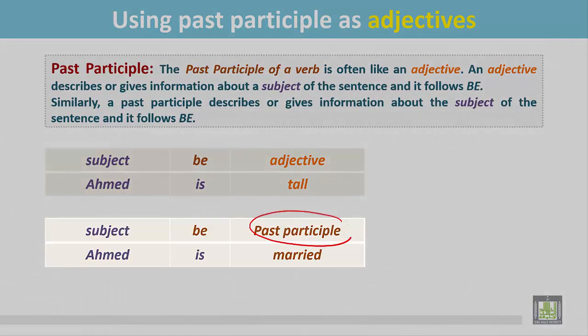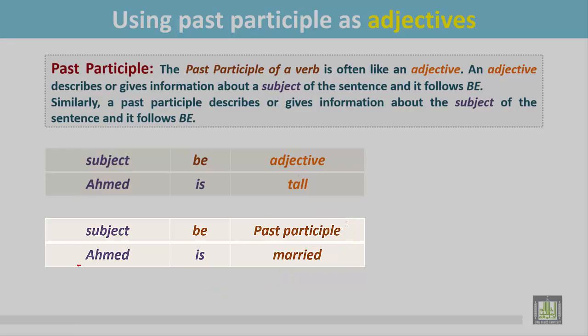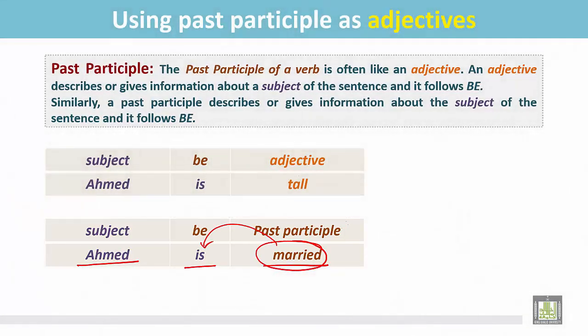Similarly, the past participle form of a verb gives information about the subject or it describes the subject. For example: Ahmed is married. The past participle 'married' follows the be verb.